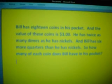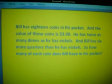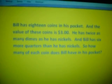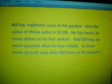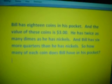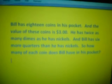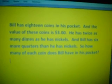In other words, if you added up the value of all these coins together, you'd have a total of $3 worth of coins. He has twice as many dimes as he has nickels, and Bill has six more quarters than he has nickels. So how many of each coin does Bill have in his pocket,